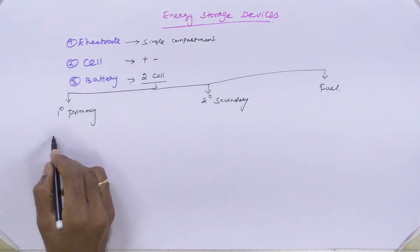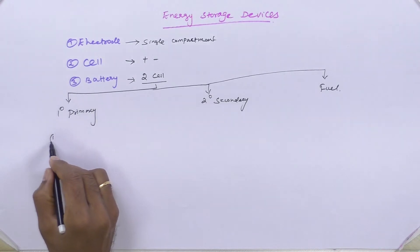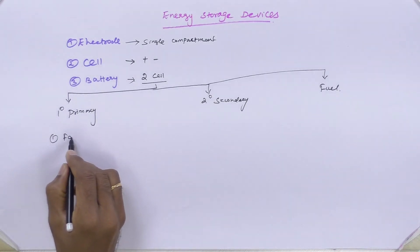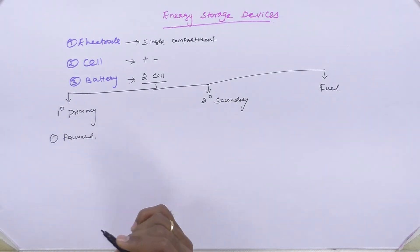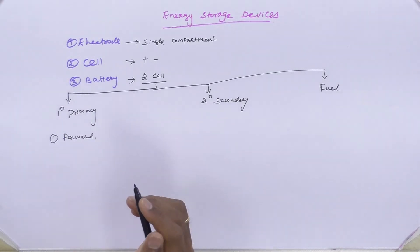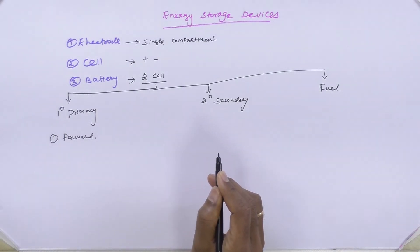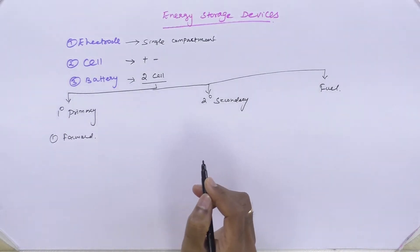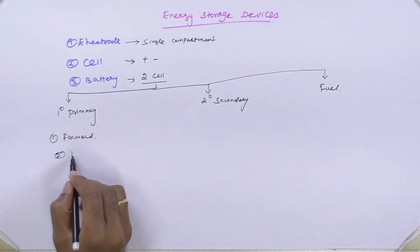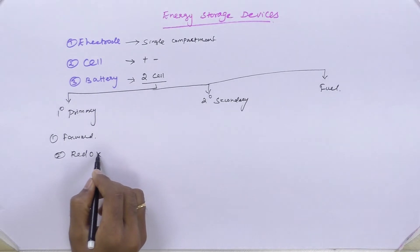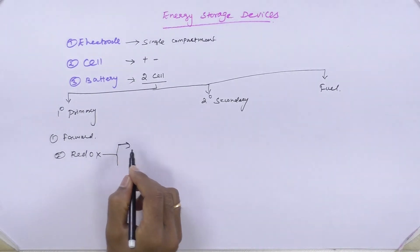A primary battery or primary cell is a kind of device in which only the forward reaction is possible. The forward reaction refers to the chemical reactions which are responsible for the production of EMF. Before studying the basic functions of electrochemical storage devices, you are supposed to be aware of the concept called the redox reaction. A redox reaction is a kind of chemical reaction in which both oxidation and reduction occur simultaneously.